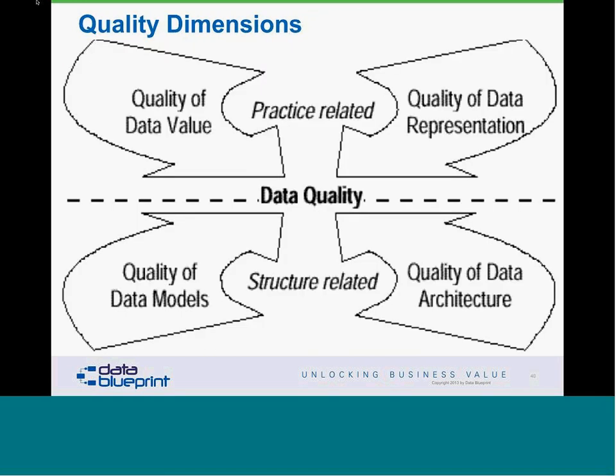You now see that data quality is a combination of four data quality dimensions: the quality of the data value and the quality of the representation — these are practice-related causes. We also need to look at the quality of the data models and the quality of the data architecture — these are structure-related. There is an analog in the real world: when you build a house, the building director comes by before you put the walls up and does a foundation inspection. If the foundation doesn't pass inspection, you should not spend any more money putting up walls or a roof, because the foundation is incapable of supporting the load you're going to put on it.